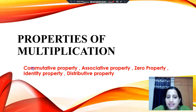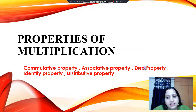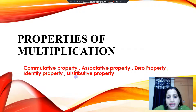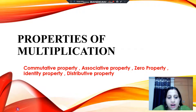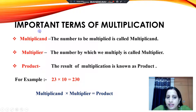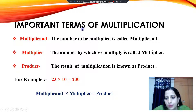These are: commutative property, associative property, zero property, identity property, and distributive property. Before starting the properties of multiplication, first we will discuss about some important terms of multiplication.